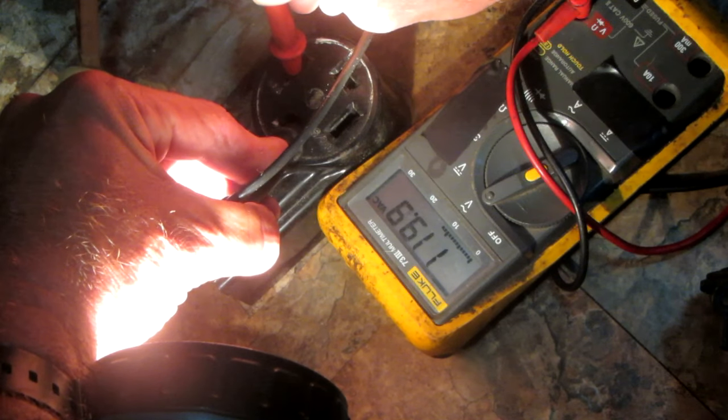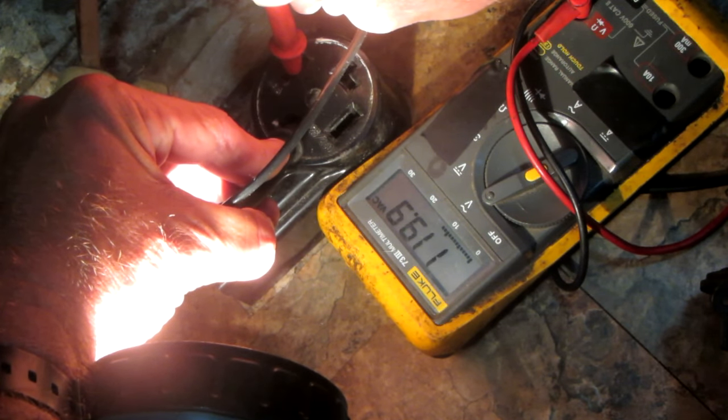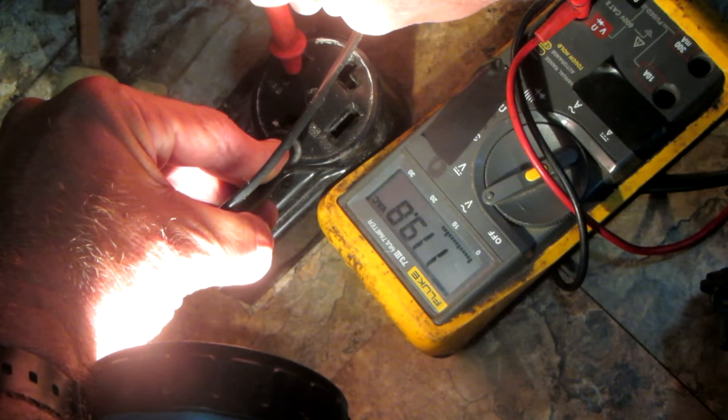Okay, we're on the ground side and we read one side of the outlet and we got 119.9 volts. Now we're checking the other side, about 119.9.